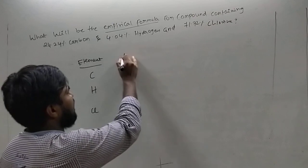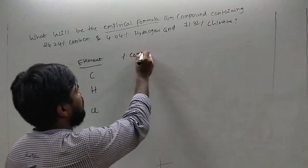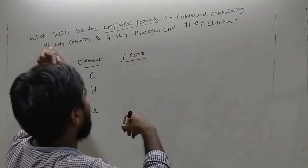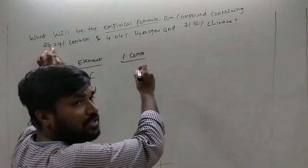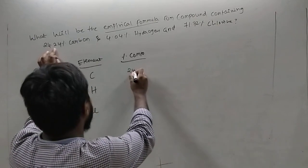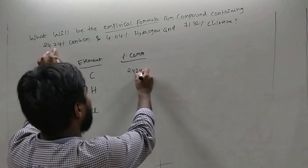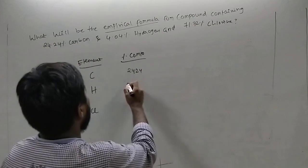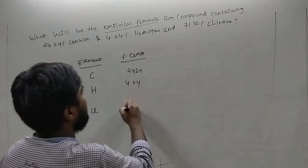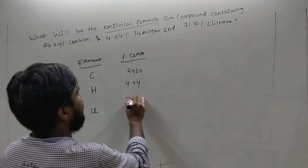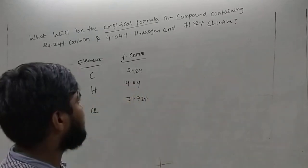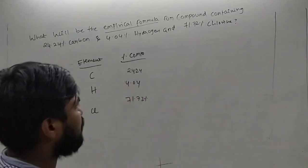Next, we write the percentage of composition. The percentage of carbon is 24.24%, hydrogen is 4.04%, and chlorine is 71.72%. This is the percentage of composition column.